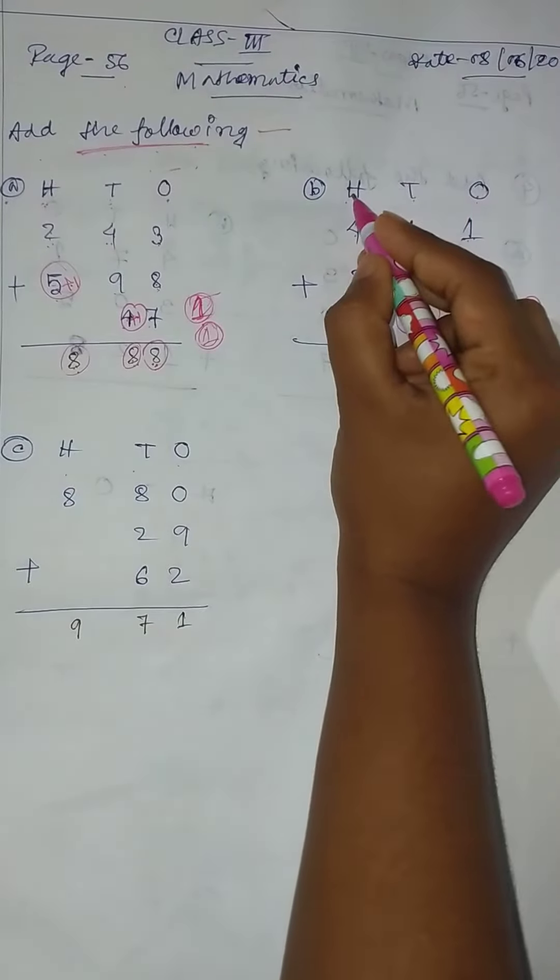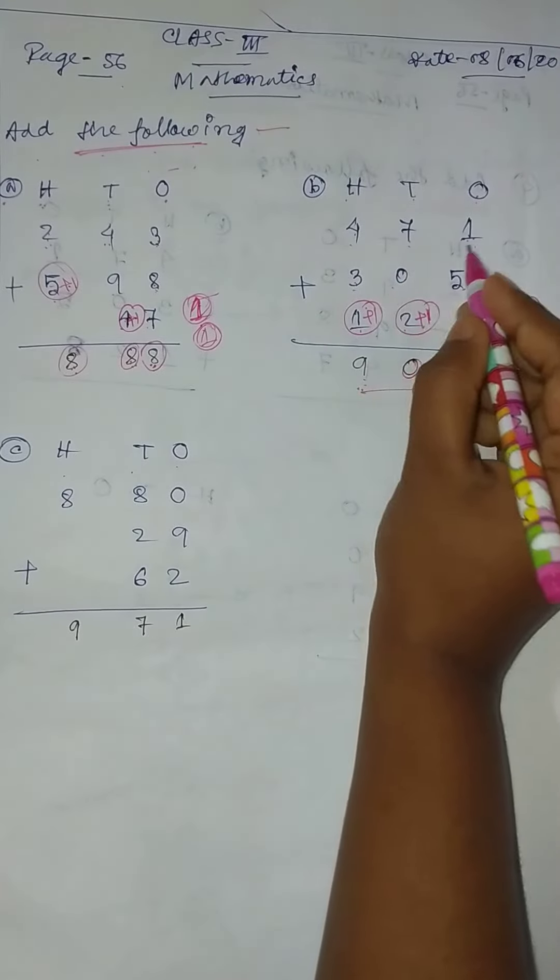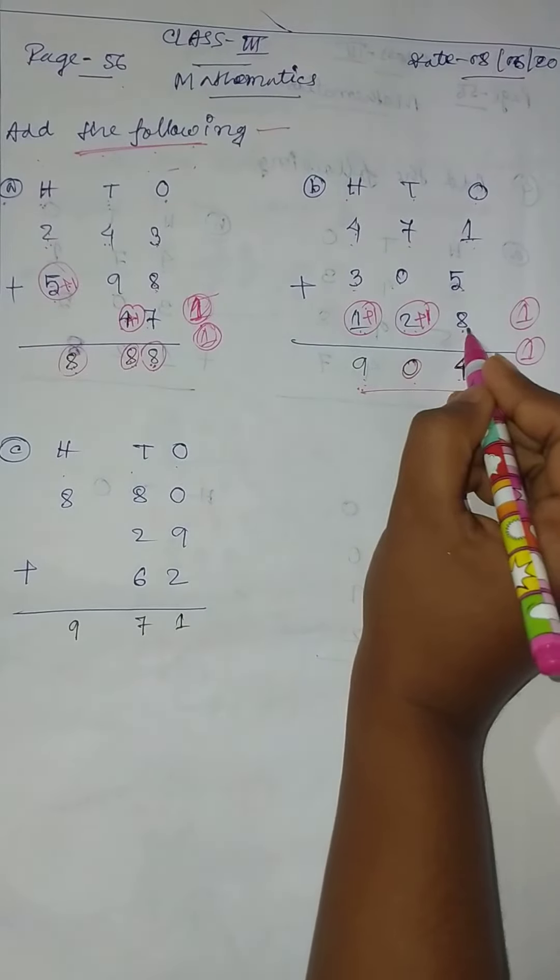Then, 1 stands 100, so 471 plus 305 plus 128.